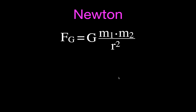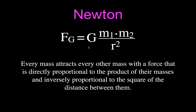Let's get started with the similarities between Newton's universal law of gravitation and Coulomb's law. Newton's law of universal gravitation says that every mass attracts every other mass with a force that is directly proportional to the product of their masses — you just multiply the two masses — and inversely proportional to the square of the distance between them. We often use R here, like a radius, because we're talking about circular paths, but R is the distance between the two objects.